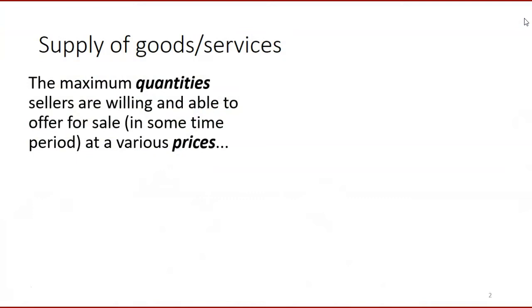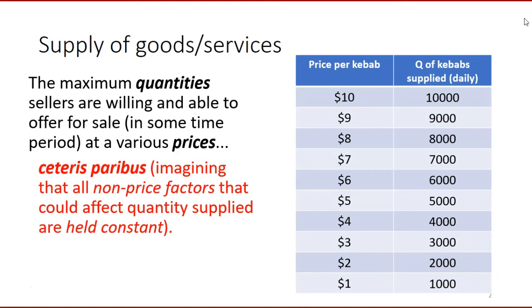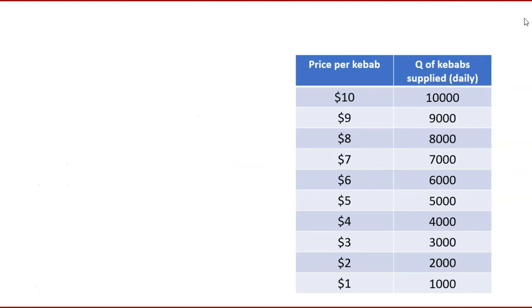When we talk about the supply of goods and services, we mean the maximum quantities that sellers are willing and able to offer for sale for some period of time at various prices. That's assuming ceteris paribus — imagining that all the non-price factors that could also affect the quantity supplied are held constant. Here's a supply schedule showing all of the quantities that would be supplied to the market daily, for example of kebabs, at the various prices.